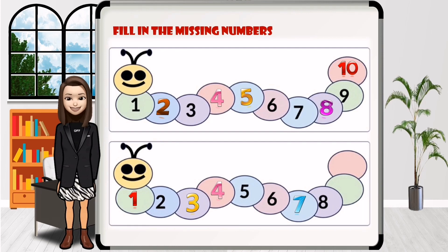And then, eight. What's the missing number here? After eight. Nine. Great job! What after the number nine? Ten.